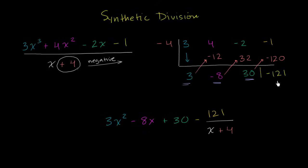Another way you could have done it, you could have said this is the remainder, so I'm going to have a negative 121 over x plus 4. And it's going to be plus 30, minus 8x, plus 3x squared. So hopefully that makes some sense. I'll do another example in the next video, and then we'll think about why this actually works.